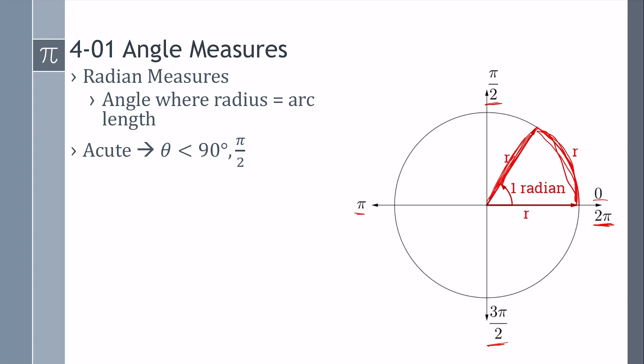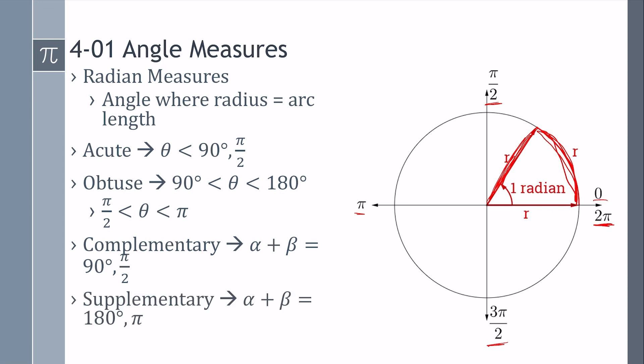An acute angle is less than 90 degrees or less than pi over 2 radians. An obtuse angle is between 90 degrees and 180 degrees, or between pi over 2 and pi radians. Complementary angles are two angles that add together to make 90 degrees, or pi over 2 radians. And supplementary are two angles that add up to make 180 degrees, or pi radians.